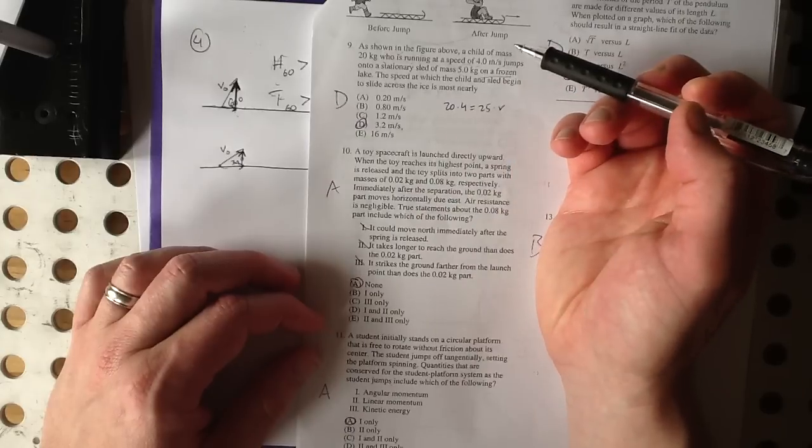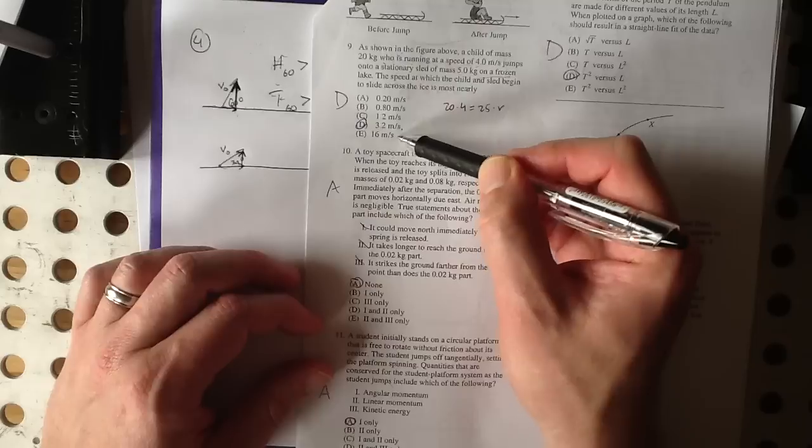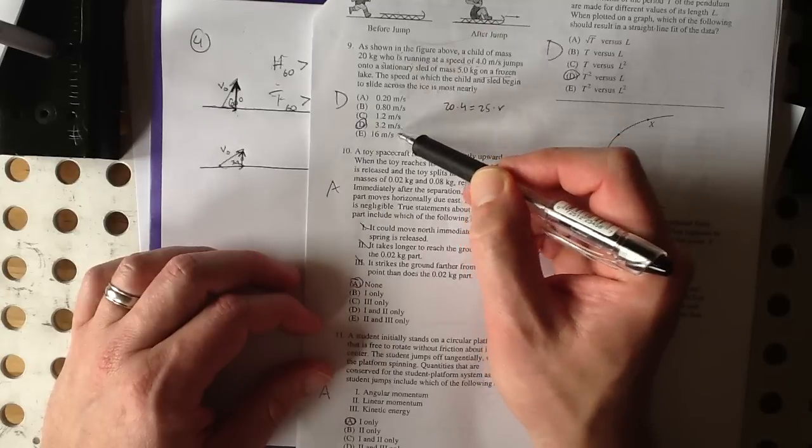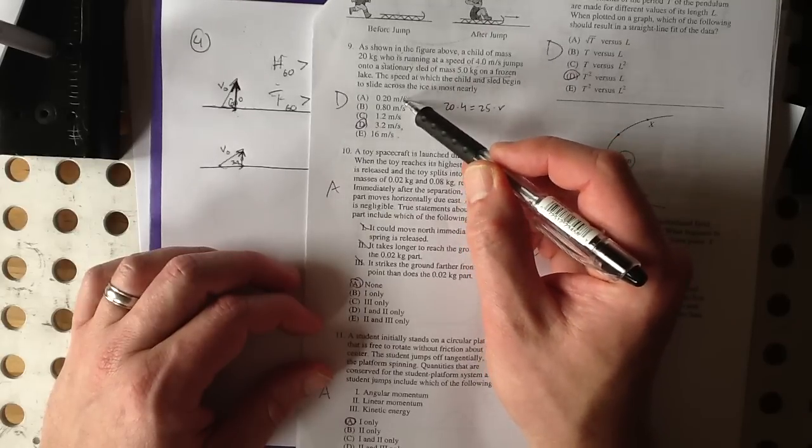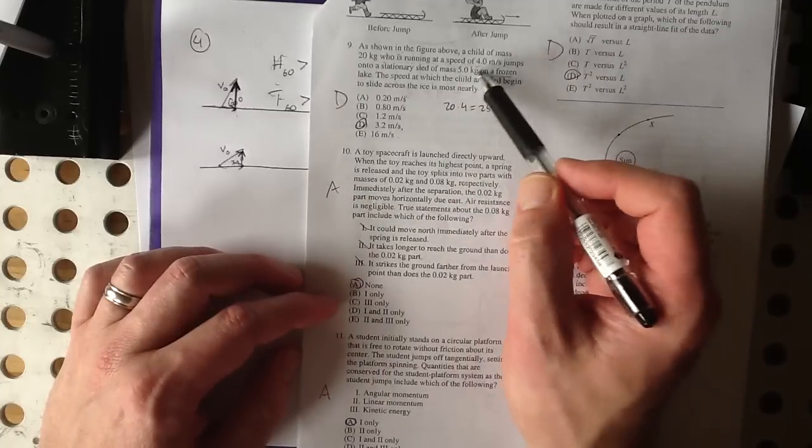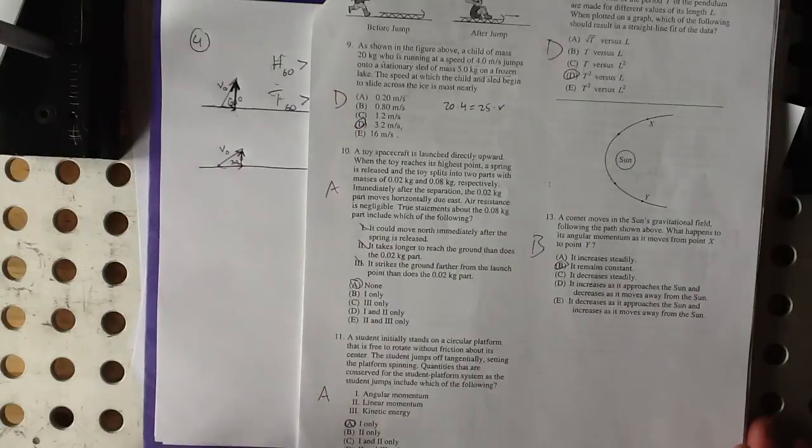And I think even just like an intuitive guess here, certainly they're not going faster, right? That doesn't make any sense. And these all seem like they're much too slow because the sled is lighter than the child. So anyway, the math is simple enough. Conservation of momentum.